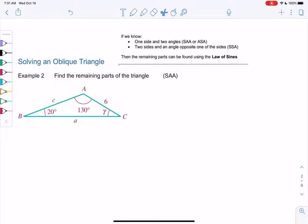Section 5.3, example 2, solving an oblique triangle. We're going to find the remaining parts of this triangle. I mentioned we can use the law of sines if we know one side and two angles, or two sides and an opposite angle. Right now we're given two angles and one side. We know one angle is 20 degrees, another angle is 130, and then we have a side. So we know side, angle, angle, which is what we call SAA.